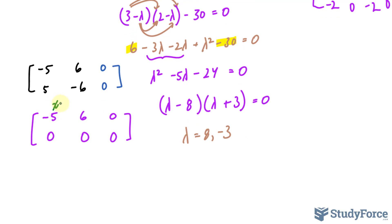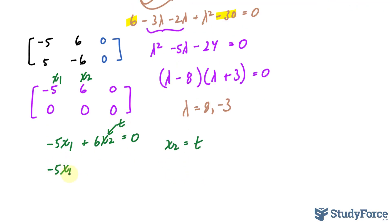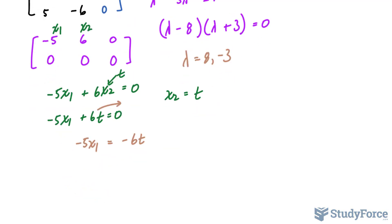Now, I'm going to call this column x sub 1 and this column x sub 2. Rewriting row 1 as an equation, I should end up with negative 5 x sub 1 plus 6 x sub 2 is equal to 0. Now notice that x sub 2 does not have a situation where we have a leading 1. I mean, take a look. It's 0. So we can call x sub 2 a parameter and set it equal to any letter we like, which I'll call t. Therefore, this is also t. So we have negative 5 x sub 1 plus 6 t is equal to 0. I'm going to solve for x sub 1 by taking that over. I have negative 6 t. And on the left side, negative 5 x sub 1. Dividing both sides now by negative 5 gives me x sub 1 is equal to 6 over 5 t.